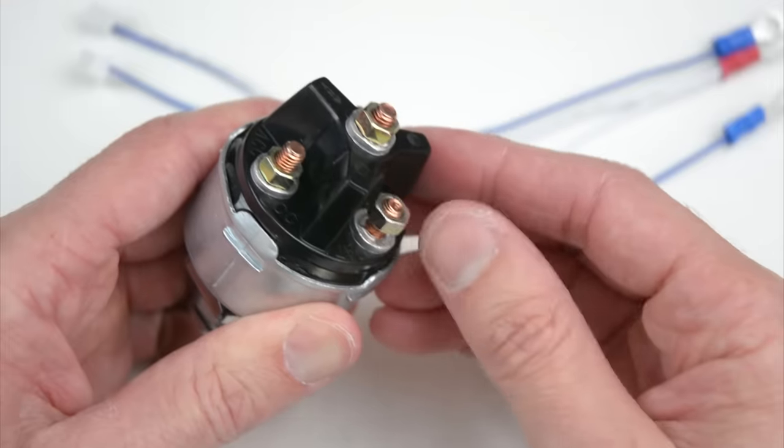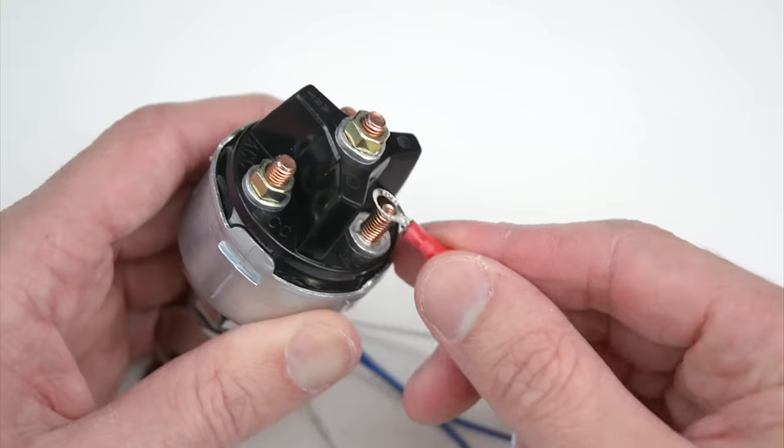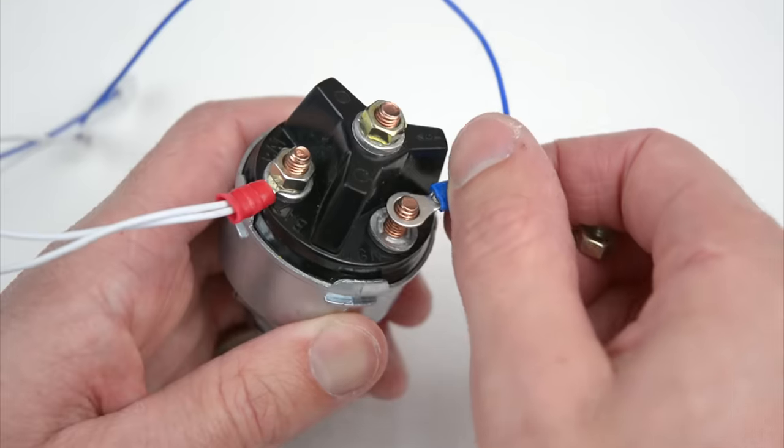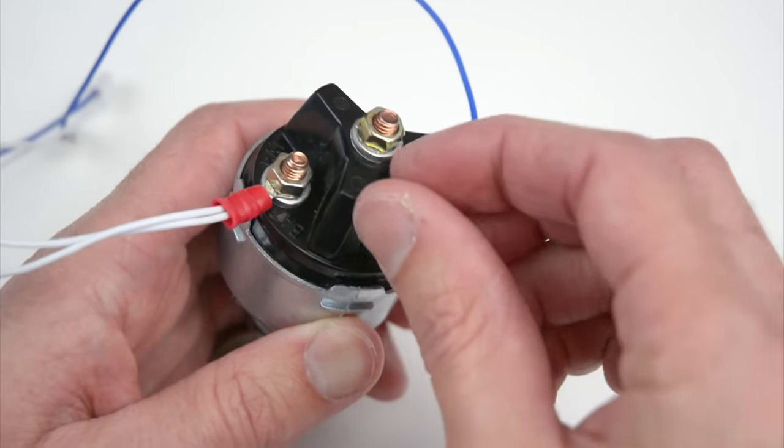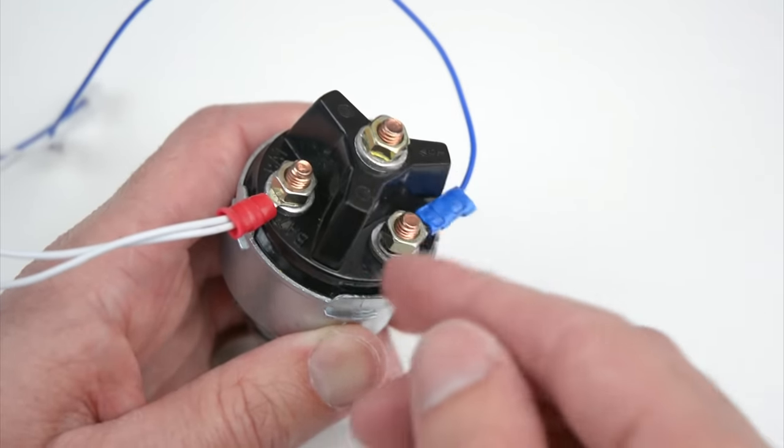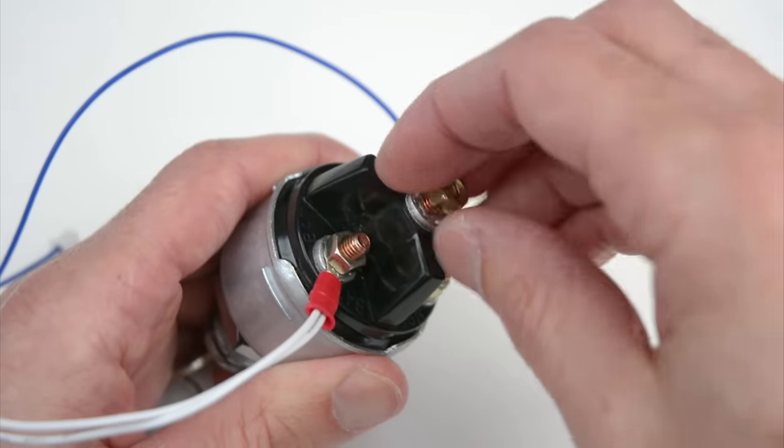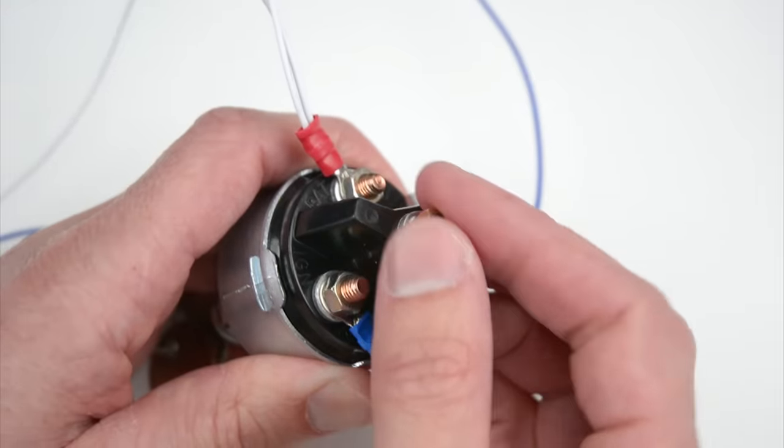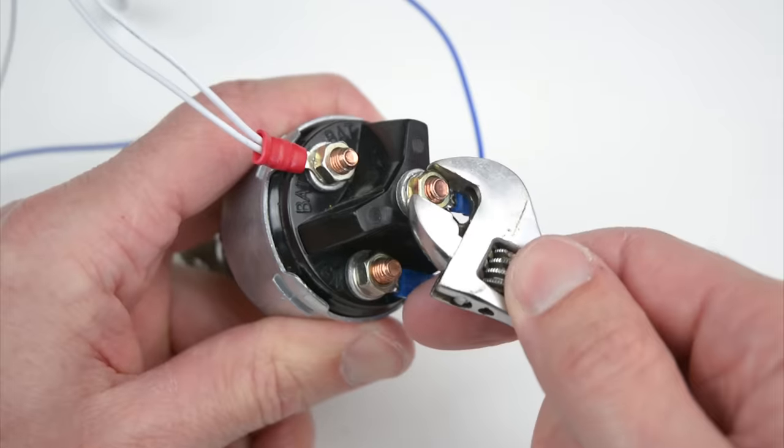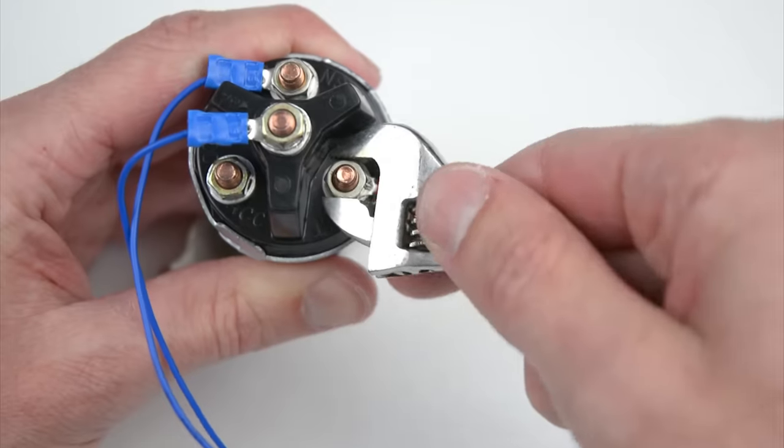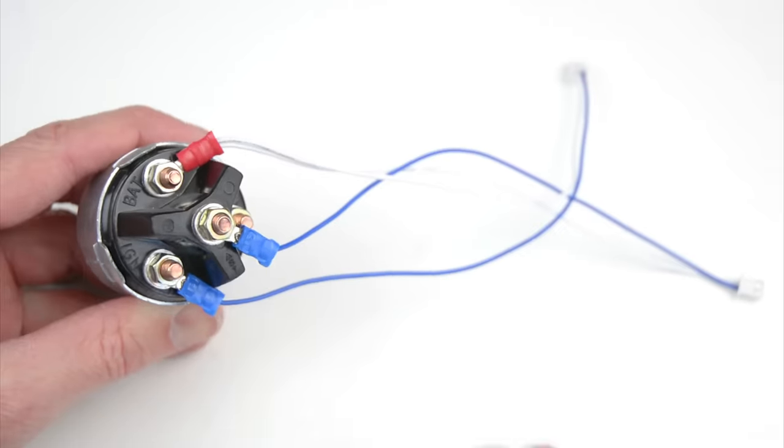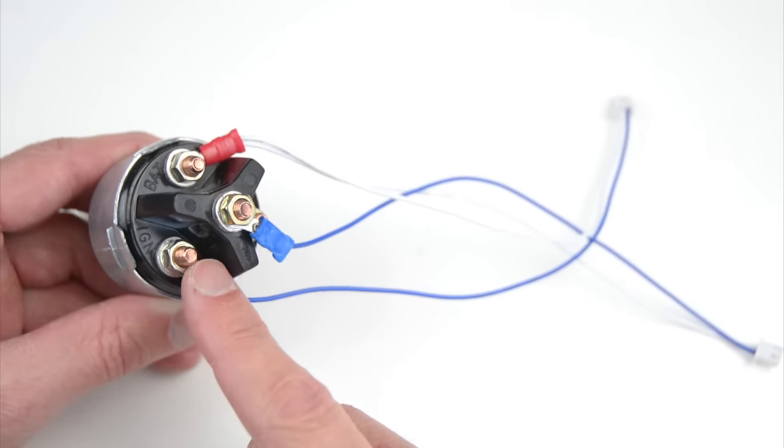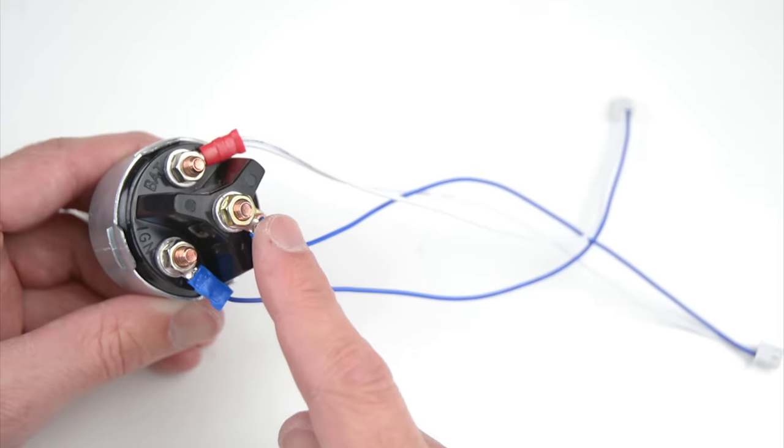For the wiring of the switch, remove the nut on the battery terminal and install the two connected white wires. Next, remove the nut on the ignition terminal and install one of the blue wires. Then remove the nut on the start terminal and install the last blue wire. With all the wiring installed, carefully tighten the nuts with a spanner. Now we have the two white wires connected to the battery terminal as the common, one blue wire to the ignition terminal, and one blue wire to the start terminal.